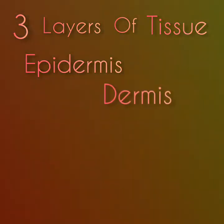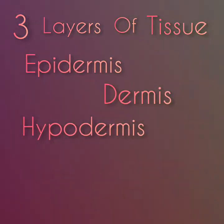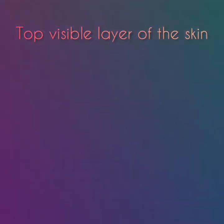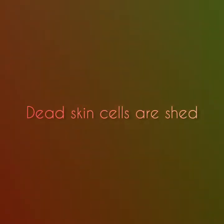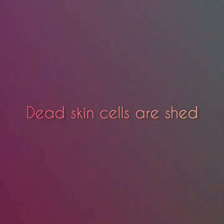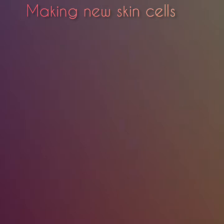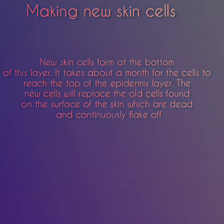The skin is made up of three layers of tissue: the epidermis, the dermis, and the hypodermis. The epidermis is the top visible layer of the skin and it is constantly being renewed as dead skin cells are shed. The main functions of the epidermis layer include making new skin cells.